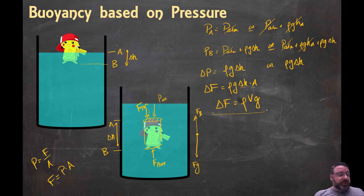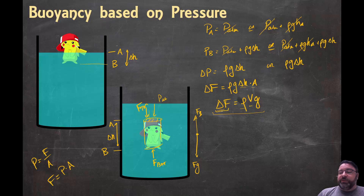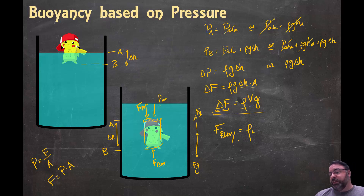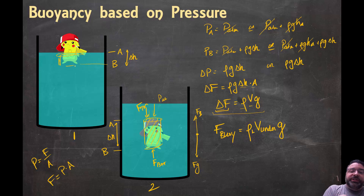That's a nice result because it does match what we saw in the experiment — the force is proportional to density and also proportional to volume. If we assume Pikachu is like a cylinder, delta H times area is just the volume of the cylinder, so the buoyant force becomes rho*V*g. This volume is really the volume that's underwater. For the fully submerged case it's the total volume of Pikachu, but for the partially submerged case it's only the part of Pikachu that's under the fluid.